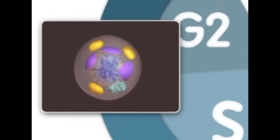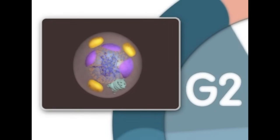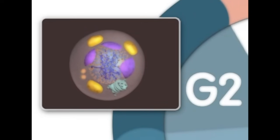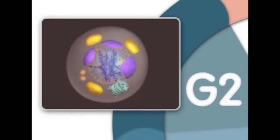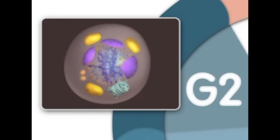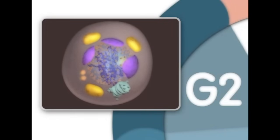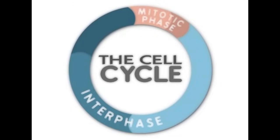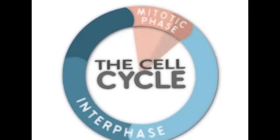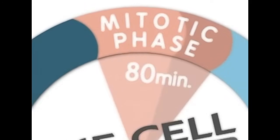The cell next enters another growth stage called G2, or GAP2. It is during G2 that the cell finishes growing. Once the cell has duplicated DNA in the nucleus and two centrosomes have appeared in the cytoplasm, mitosis can begin. For a typical eukaryotic cell, this will last about 80 minutes.